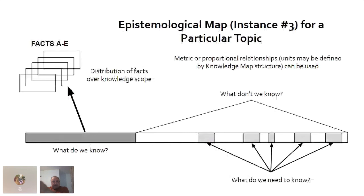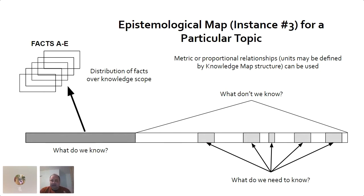Epistemological maps, the third instance, take us further. This is a visualization — a theoretical sketch with two categories of facts. One is 'what do we know' — the knowledge maps I showed, things we know happened in the history of the field. The other is 'what do we need to know' or what we don't know. For instance, in computing we have people who made contributions and were forgotten about that we'd like to bring back into the fold.